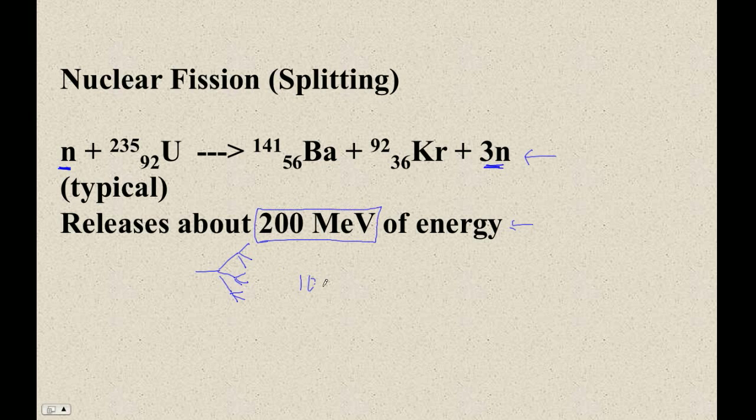Chemical reactions are tens of just plain electron volts. We're not talking millions of electron volts. On the order of 10 electron volts are chemical reactions. Tens of electron volts. So this is a tremendous amount of energy.